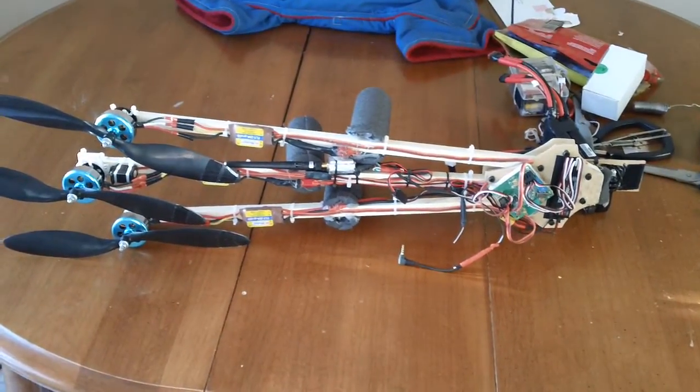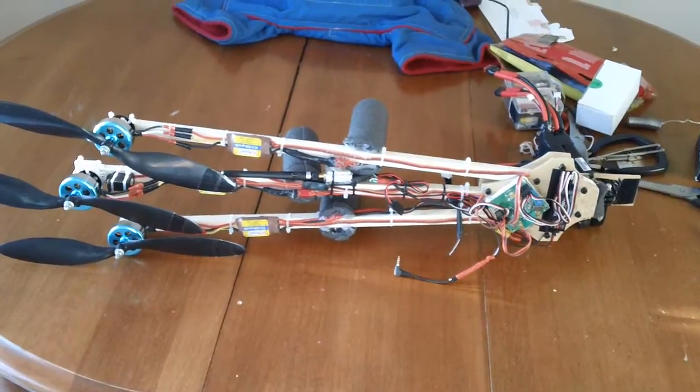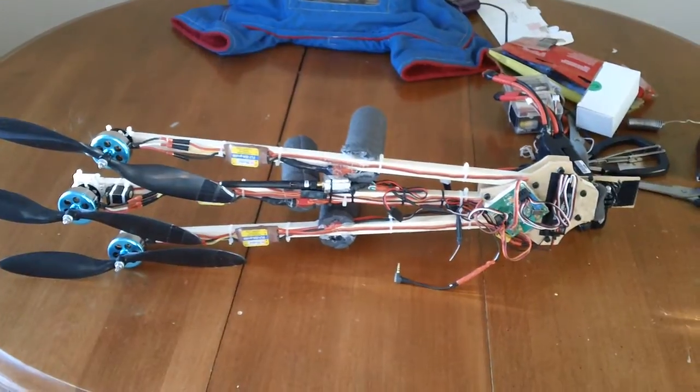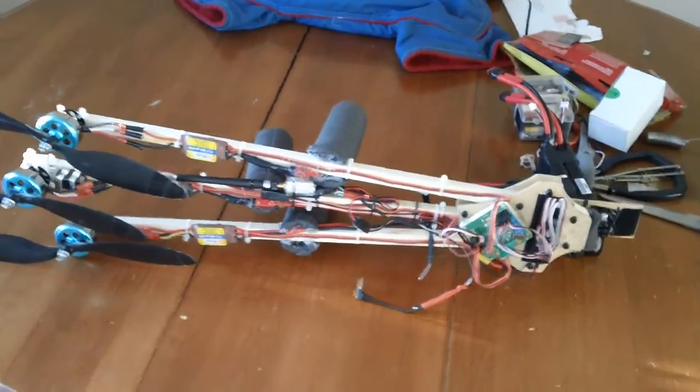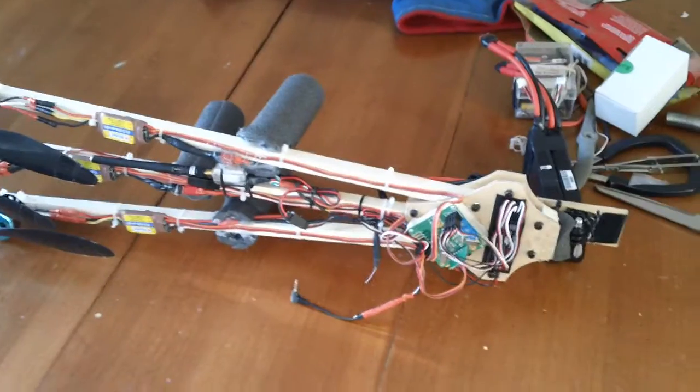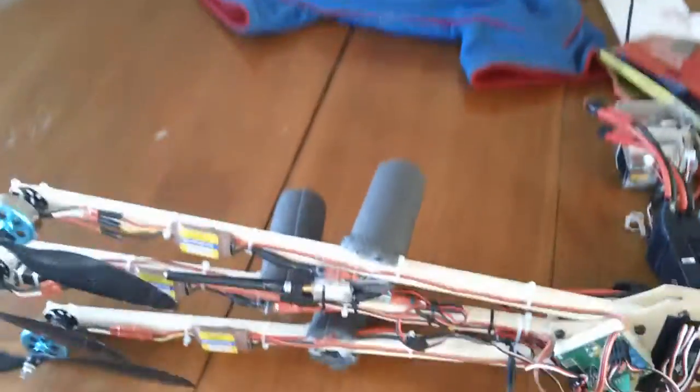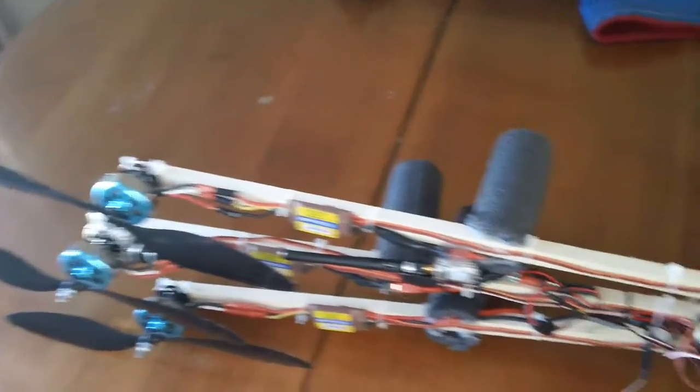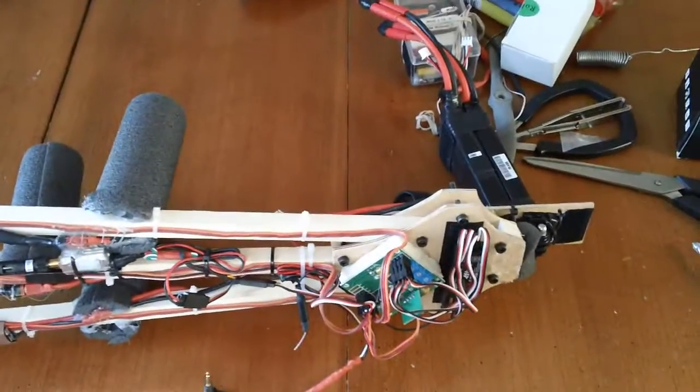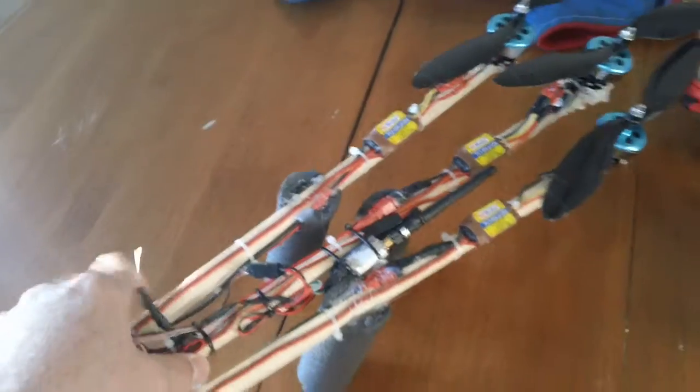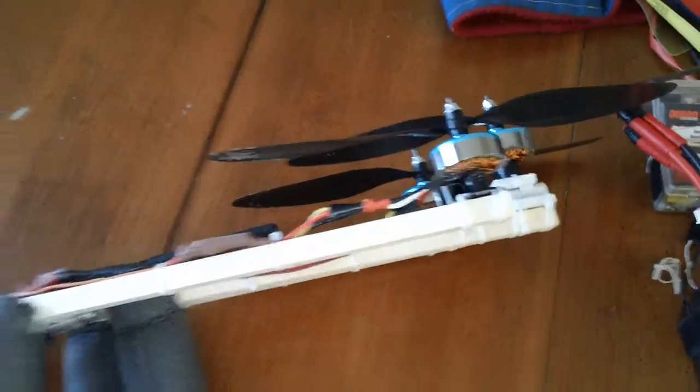This is my version of the RC Explorer version 2.5 tricopter. I built this a little while ago and I came pretty close to following David's original plans. I didn't really want to change anything that he'd designed. It works for him and I really like the simplicity of how everything's laid out.